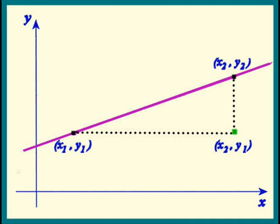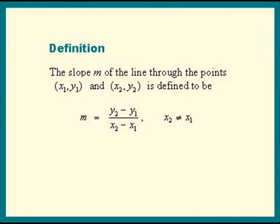The run is therefore x2 minus x1, and the rise is y2 minus y1. The slope of this line is defined to be the change in y over the change in x: y2 minus y1 divided by x2 minus x1.